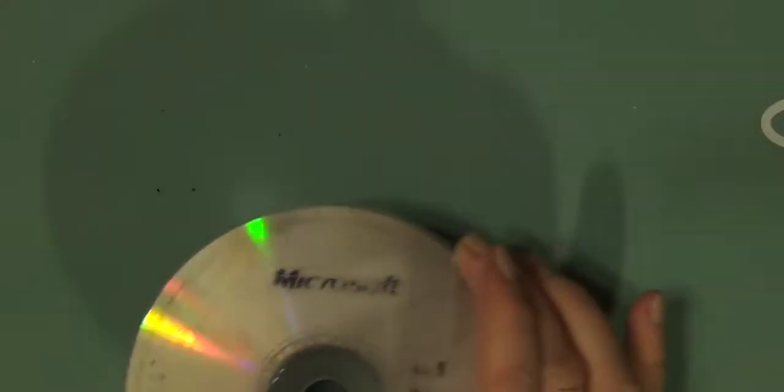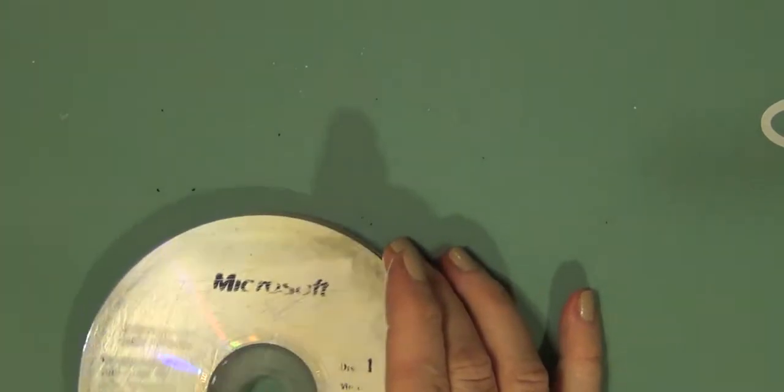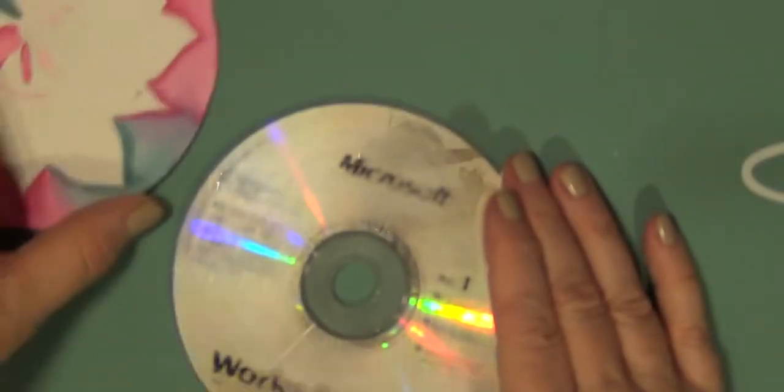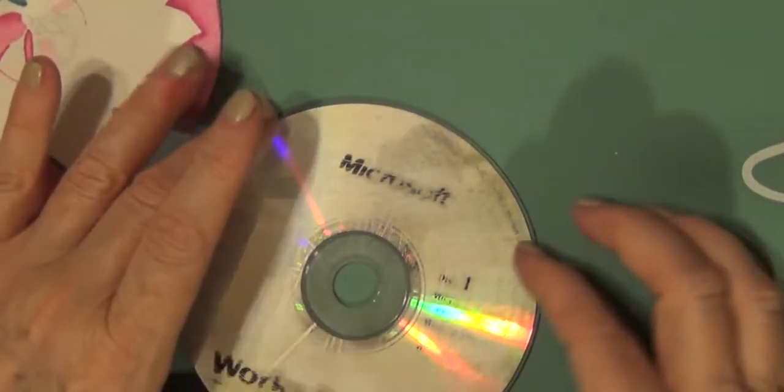Now the next thing we're going to do is fill the hole. This is a Heidi Swapp Make Pretty Stuff mat, but it's just a silicone mat. So anything, any kind of mat that you use hot glue with, and I think parchment paper if I'm not mistaken will also work very well.